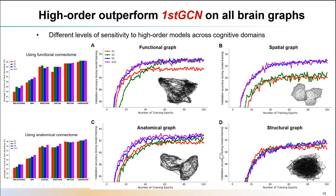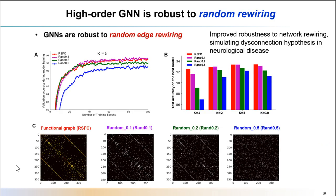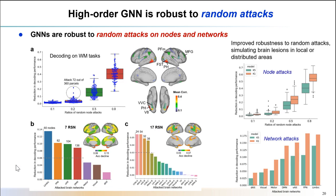These high-order interactions show different impacts across different cognitive domains, depending on the demands of cognitive function. For instance, for high-order cognitions such as working memory and relational processing, it requires high-order interactions and functional integration between networks. On the other hand, for unimodal brain functions such as motor and language tasks, it relies more on the neural activity within a specific network. In addition to the improvement of decoding accuracy, the high-order model also shows more robustness to random rewiring on brain connectivity and to random attacks on brain regions and networks.